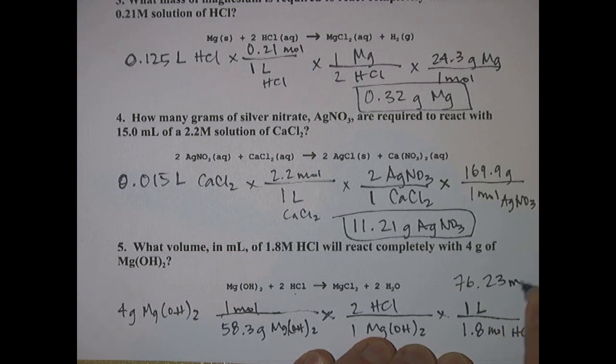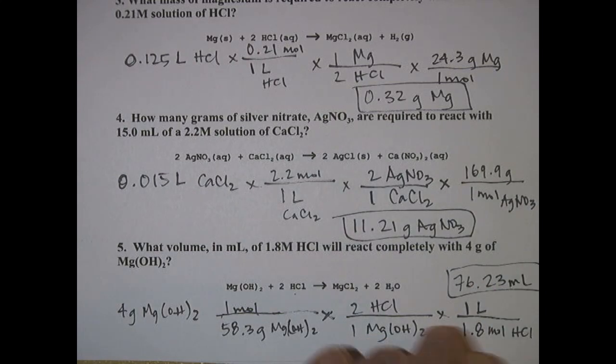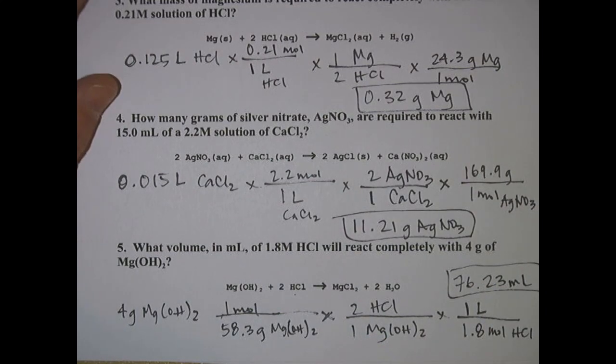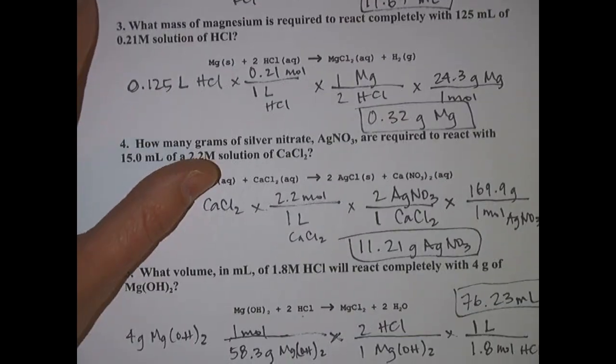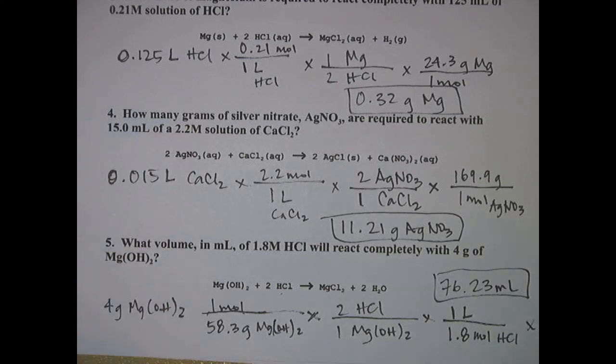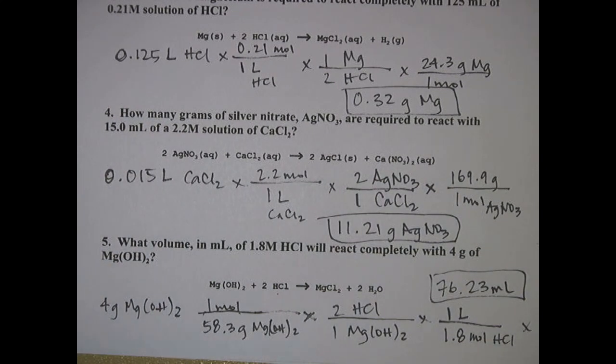If you do all that your answer ends up being 76.23 milliliters. So there you go, a walkthrough of the three different kinds of solution stoichiometry problems here represented in these five different examples. Thanks for watching, bye.